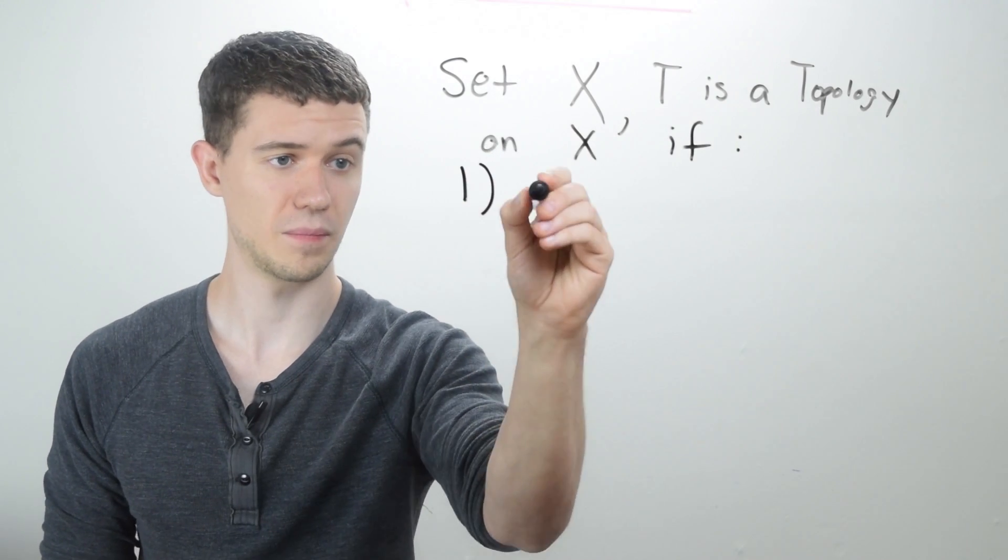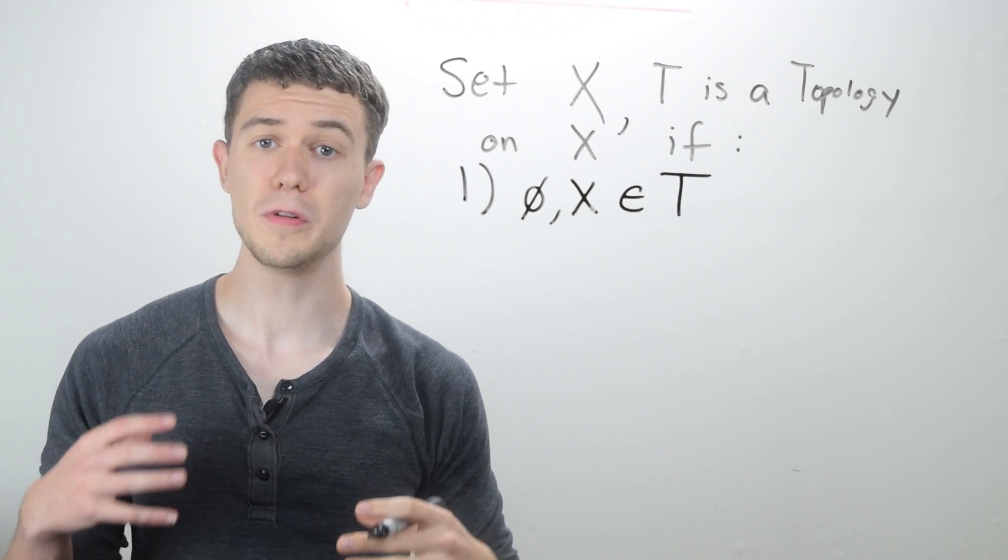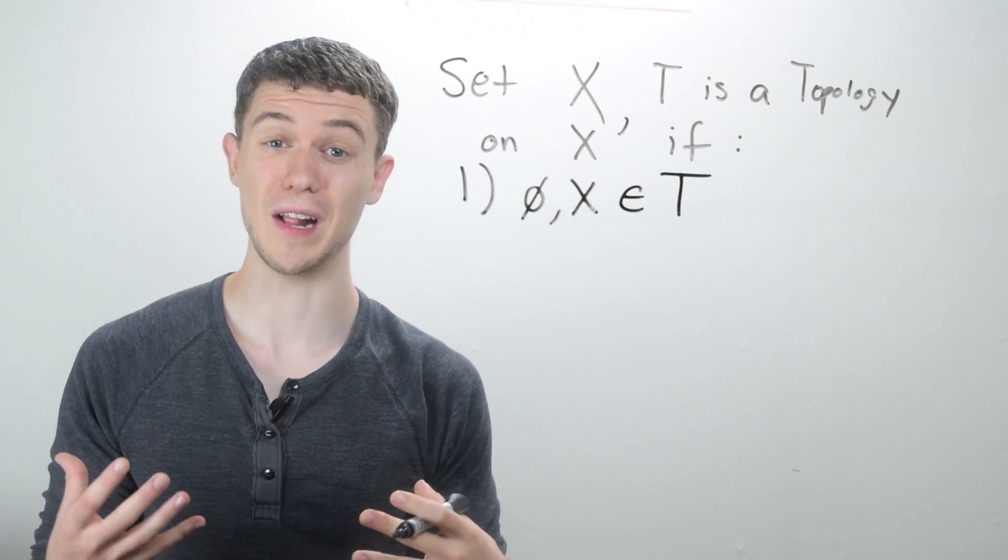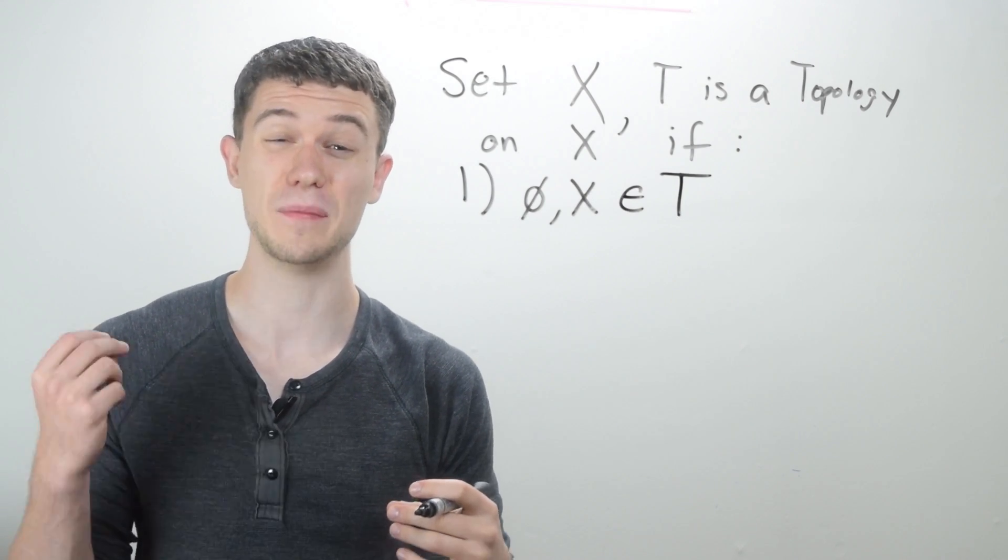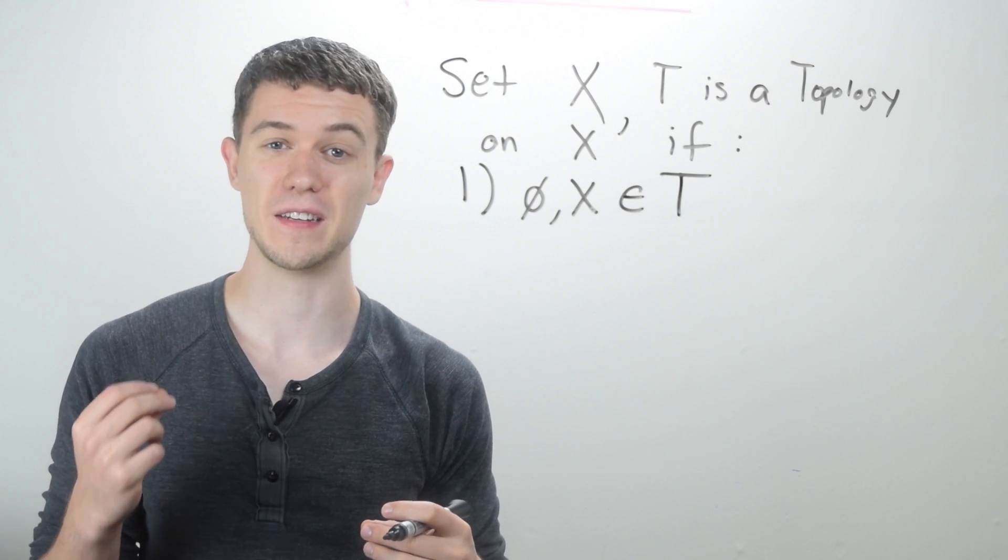So number one, both the empty set, the set with no elements, and the set X itself have to be in T, have to be in the topology.